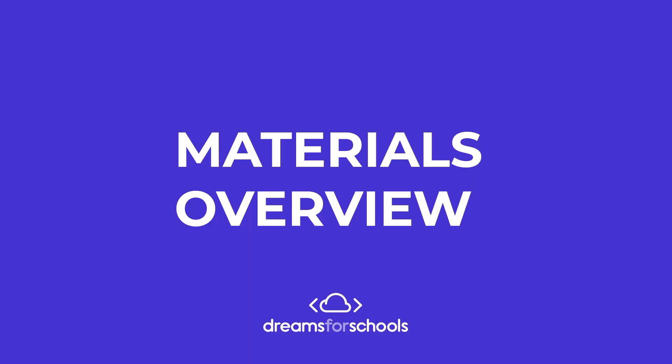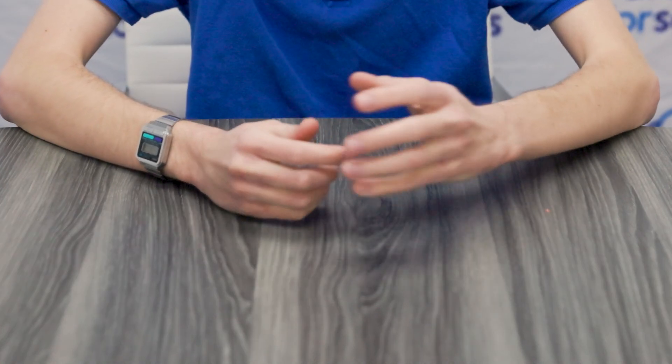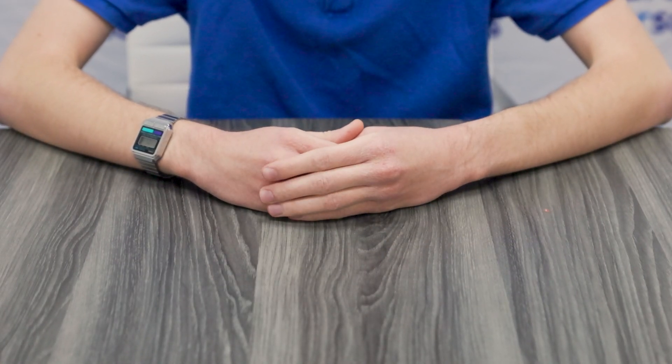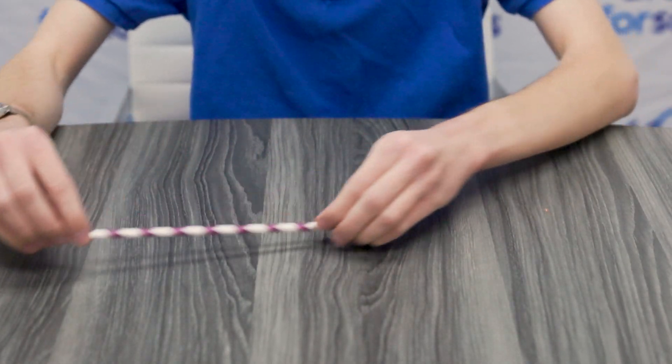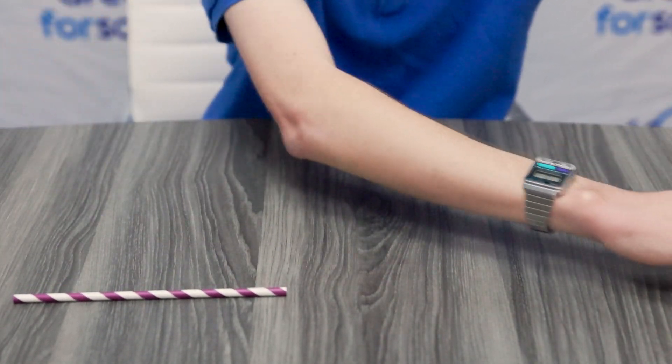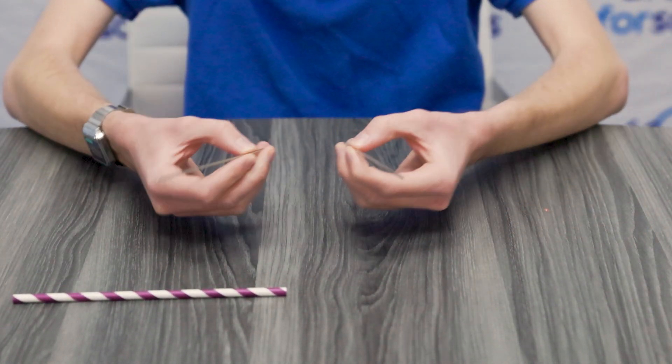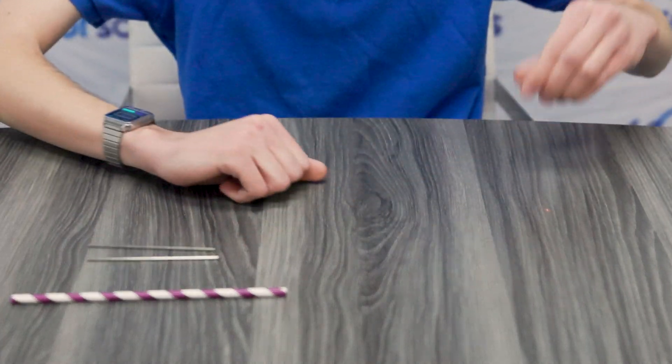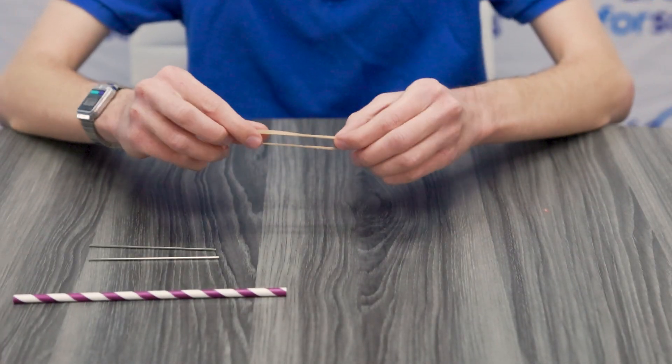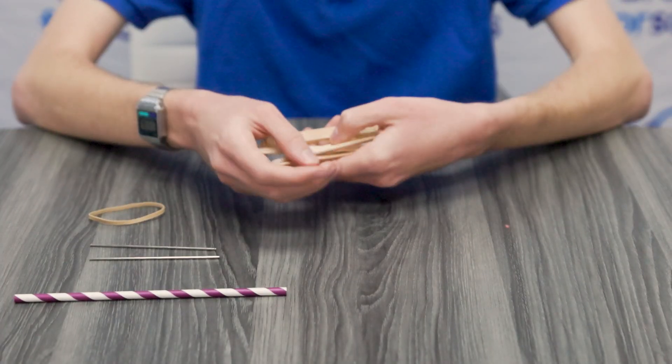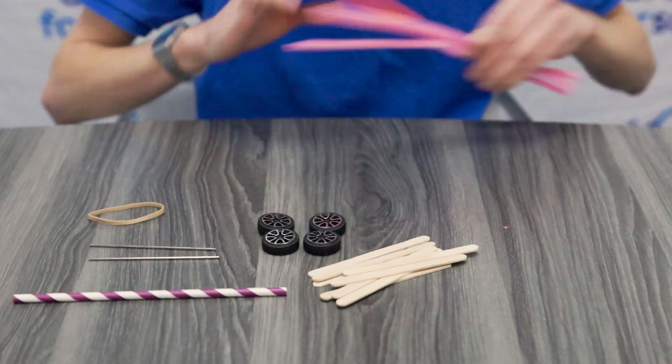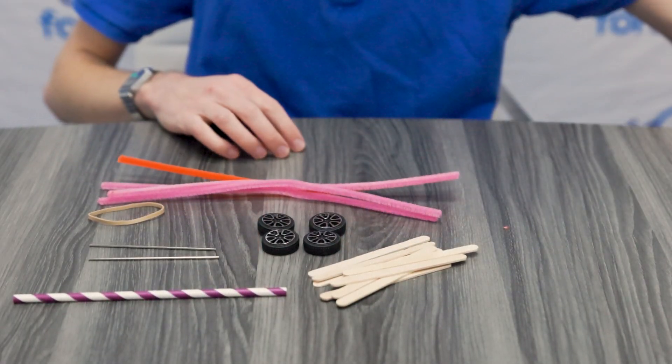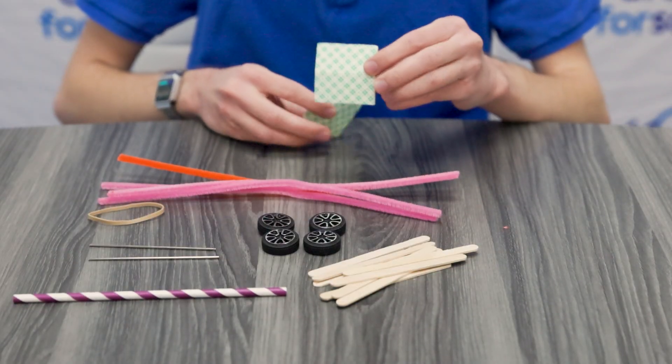Now that we know what we're building, let's make sure that we have all of our materials ready. Inside of our project bag we should have a plastic or a paper straw, two metal axle rods which should be two millimeter stainless steel rods, one medium rubber band.